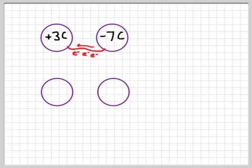How much total charge is there in the beginning? Plus 3, minus 7, gives us a total charge of negative 4 coulombs. Coulomb is just a unit of measurement for charge.